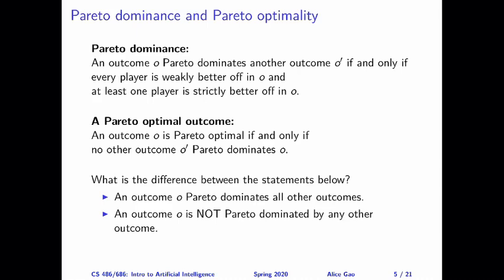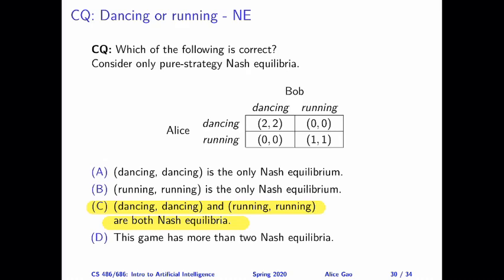Pareto dominance is a way for us to compare multiple outcomes of a game. In this definition, we are comparing outcome O with outcome O prime. What do I mean when I refer to an outcome? An outcome of a game is a combination of actions of the players — one action for each player. So in our 2x2 game, we have four possible outcomes: dancing-dancing, dancing-running, running-dancing, and running-running.